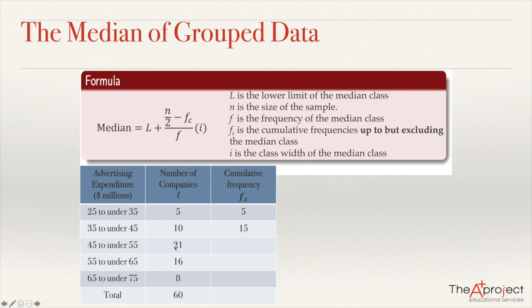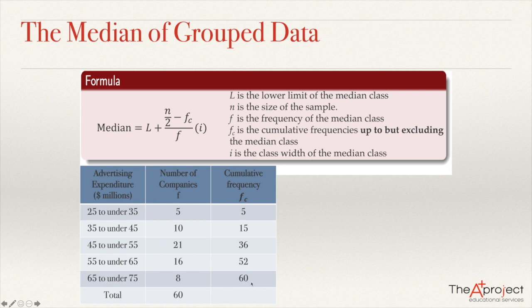15 plus 21 will be 36. 36 plus 16 is 52. 52 plus 8 is 60. The cumulative frequency of the last class is the total number. When I say 60, there are 60 companies whose expenditure is less than 75 million of dollars, and I know that because the upper limit is 75 million.